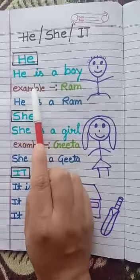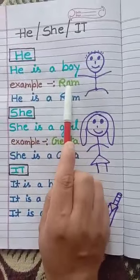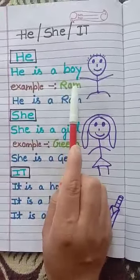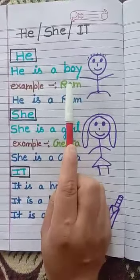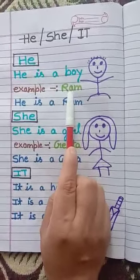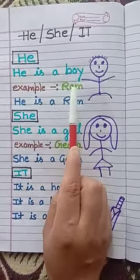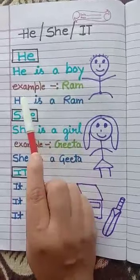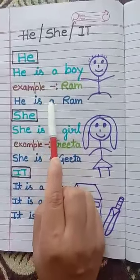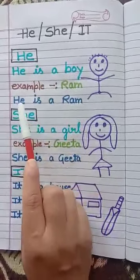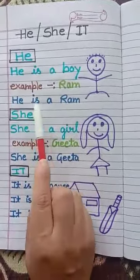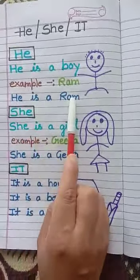For example, Ram. Ram is the name of a boy. He is Ram.